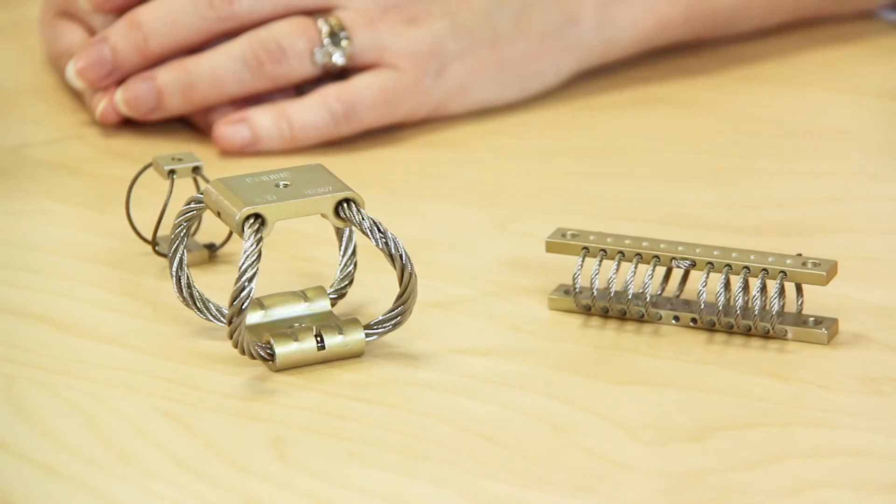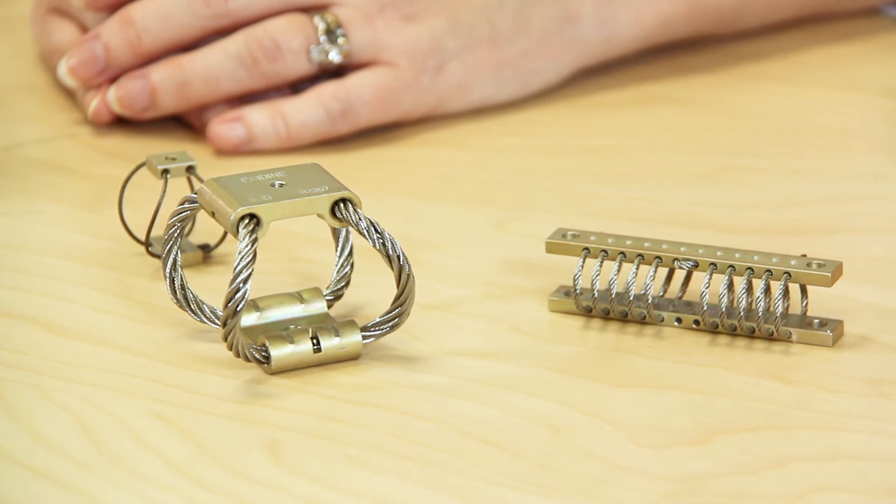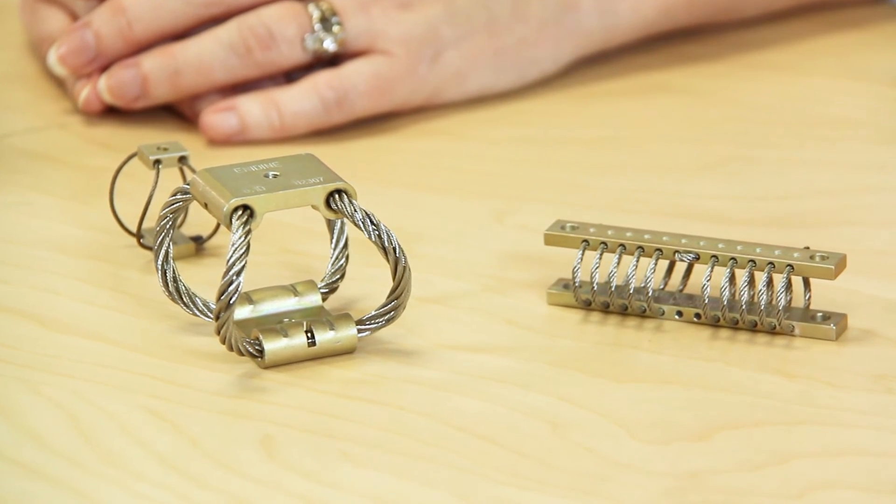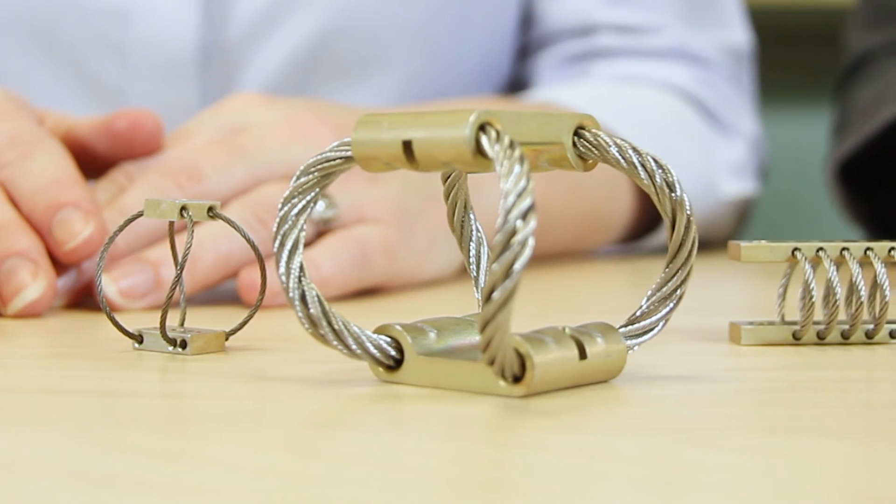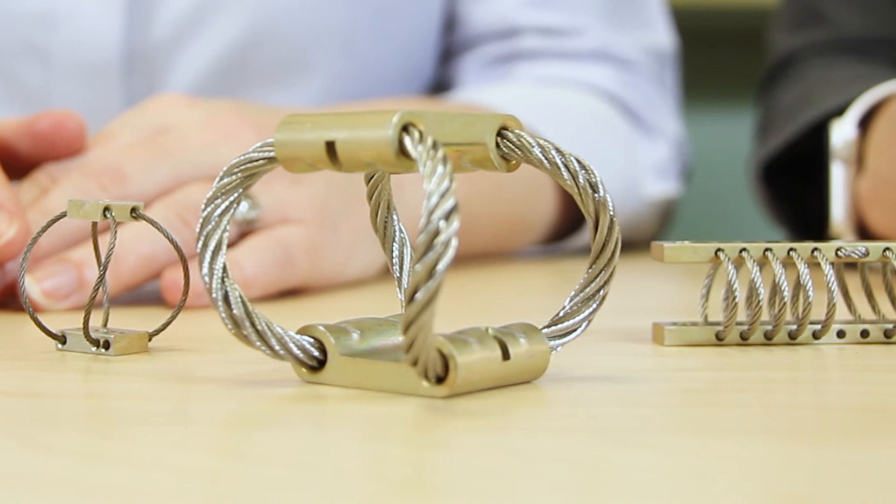One caveat, wire rope isolators exhibit non-linear stiffness, so small deflections, usually associated with vibration isolation, induce different spring rates than large shock deflections. ITT Anodyne publishes average vibration stiffness and shock stiffness values. These values go into equations to predict system performance.